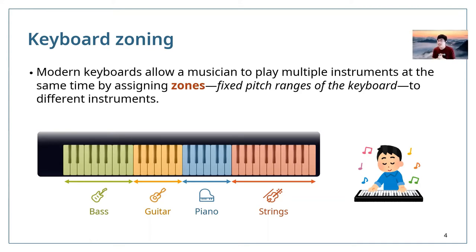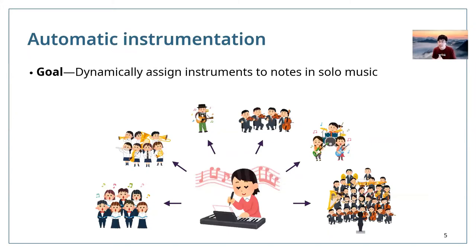However, this is not ideal. What if we can achieve this without having to define the zones beforehand? And what if we can do better than zoning by dynamically assigning instruments to the notes being played, so we don't get limited by the zones? In this project, we are aiming for something more ambitious, which is called automatic instrumentation — the process of dynamically assigning instruments to notes in solo music.